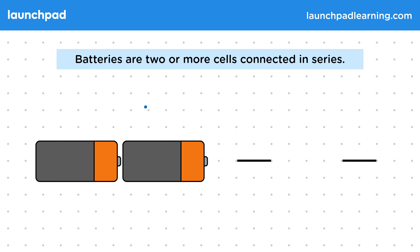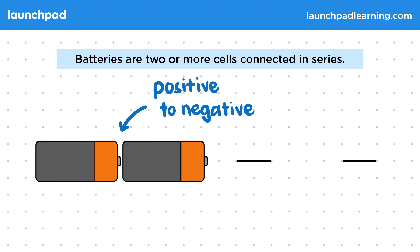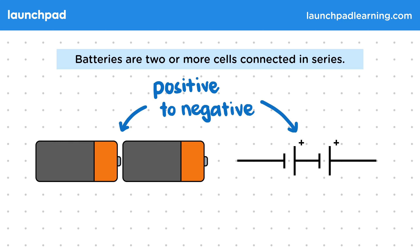When connecting the two cells, we should make sure that we connect a positive terminal to a negative terminal, otherwise we won't get the power we want. The circuit symbol for a battery is just the symbol for a cell repeated twice. We should make sure that these are connected positive to negative when we draw a circuit diagram. So make sure to only use the word battery for circuits with multiple cells.